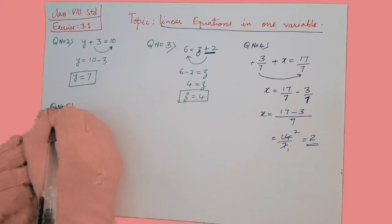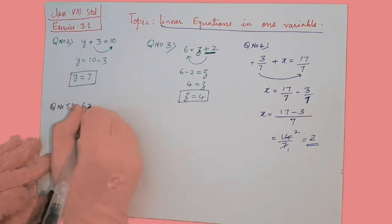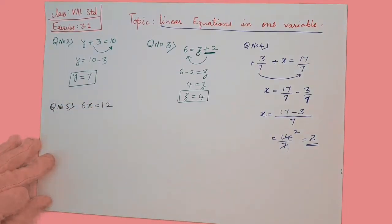Let us see this question: 6x is equal to 12.